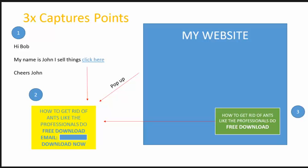Now we're at the point where we're going to be installing the capture points into our website. In the previous video, you'll recall I had three capture points and these are the three we're going to set up. The first one is: if you had an email with a 'click here' link, how this would point to an opt-in box. This could be on an email, a Facebook page, or anywhere on your website.